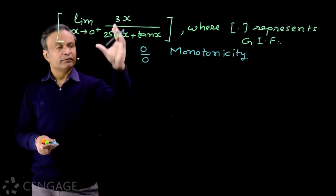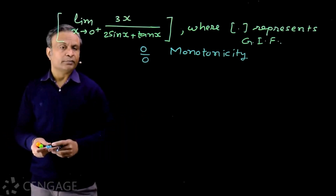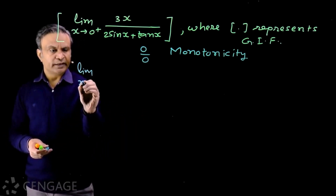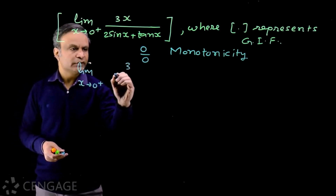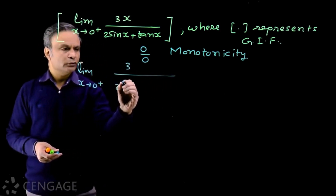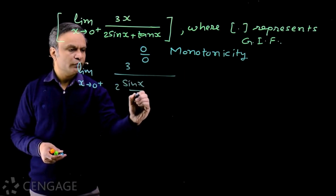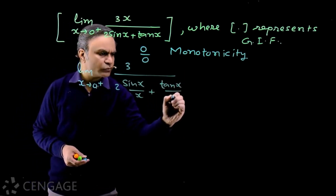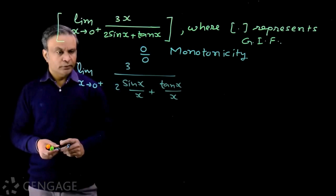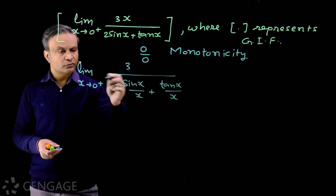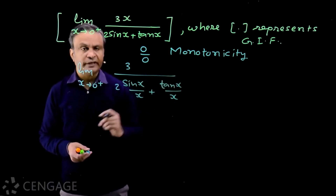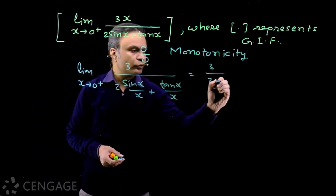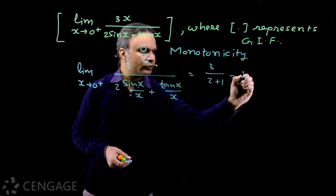So what we do — we divide numerator and denominator by x. So we have limit x tends to 0+ of 3 upon (2·sinx/x + 10x/x). Now limit x tends to 0+ of sinx/x is 1, and limit x tends to 0+ of 10x/x is 1. So we have the limiting value 3 upon (2 + 1), which equals 1.